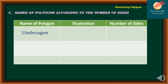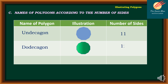If we have 11 sides, we call it an undecagon. If we have 12 sides, we call it a dodecagon. However, if we have 13 or more sides, we generally call that an n-gon.